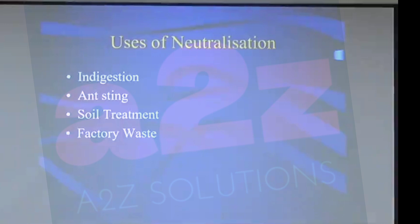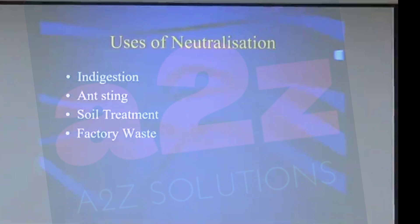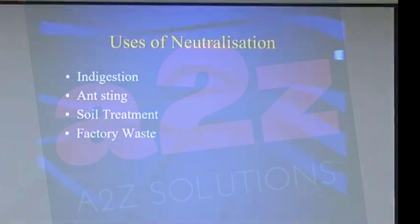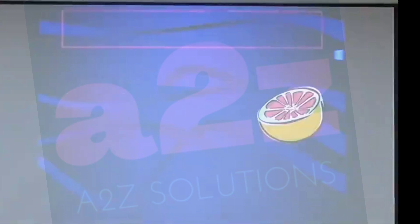For soil treatment: crops grow well in basic or neutral soils, but some places have soil that is acidic in nature. In order to convert acidic soil into basic soil, we need to add bases like lime or slaked lime. Lime is calcium oxide and slaked lime is calcium hydroxide. These bases will neutralize the acidic effect of the soil and change it to basic nature so it is fit for growing crops. For factory waste: factory waste may contain various acids, and we need to neutralize them before dumping into water bodies so they are converted to substances not harmful to water bodies.